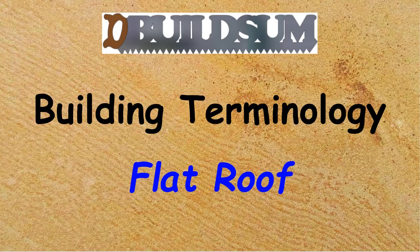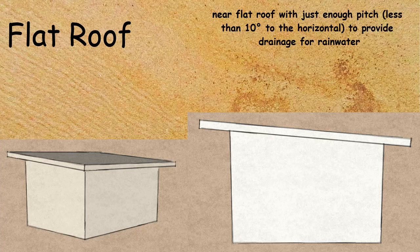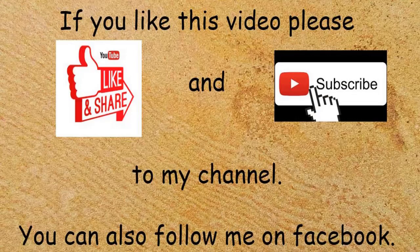A flat roof is defined as a roof with just enough pitch — typically less than 10% to horizontal — to provide adequate drainage for rainwater. For these types of roofs, you wouldn't tile them; you would have to use continuous sheet metal roofing.